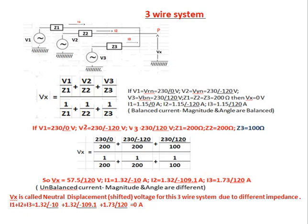Vx is called neutral displacement voltage — the shifted voltage for this 3-wire system due to different impedances. Importantly, I1 + I2 + I3 = 1.32∠−10° + 1.32∠−100.1° + 1.73∠120° = 0 amperes.